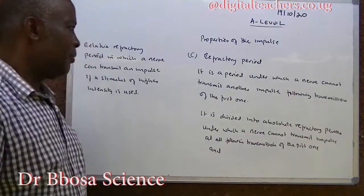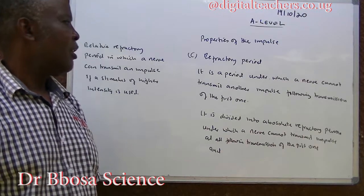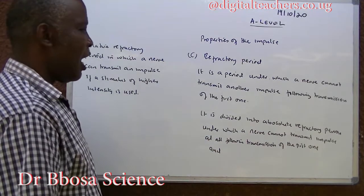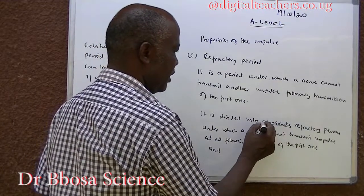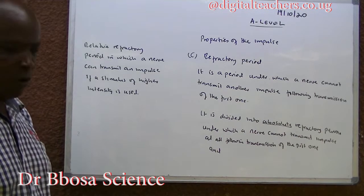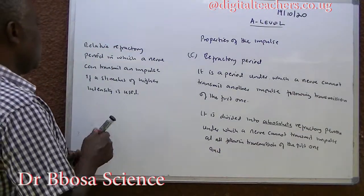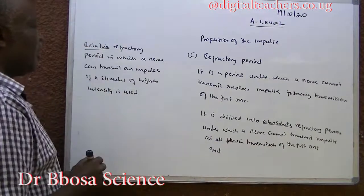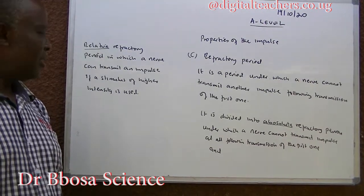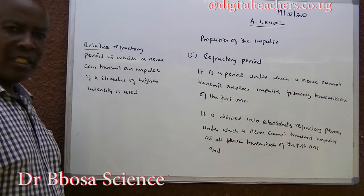Refractory period: This is the period during which a nerve cannot transmit an impulse following transmission of the first one. This is divided into: absolute refractory period, during which a nerve cannot transmit an impulse at all following the first one; and relative refractory period, during which a nerve cannot transmit an impulse unless a stimulus of higher intensity is used.